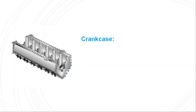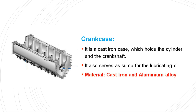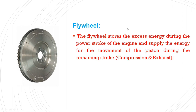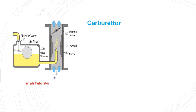The crankcase is a cast iron case which holds the cylinder and crankshaft. It also serves as a sump for the lubricating oil. The material used for the crankcase is cast iron and aluminum alloy. The flywheel stores the excess energy during the power stroke. During the power stroke, maximum energy is released, and the excess energy is stored in the flywheel, which then uses this energy during the compression and exhaust strokes to maintain uniform rotation of the crankshaft. The material used for the flywheel is cast iron.